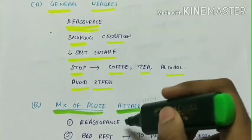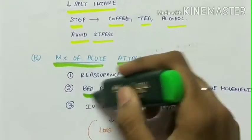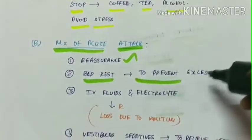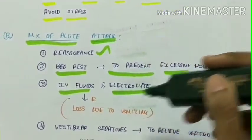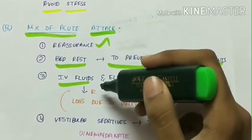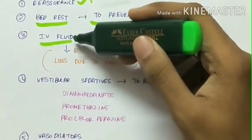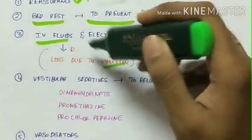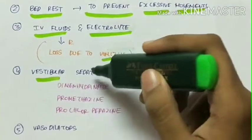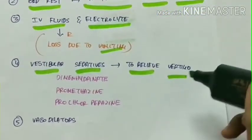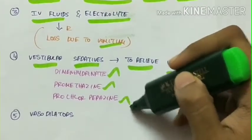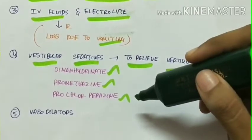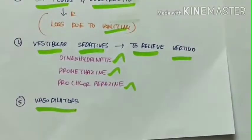Next is the management of acute attack. The first step is reassurance. Next, bed rest is advised to the patient to prevent excessive movements. IV fluids and electrolytes are given because there is loss of fluids and electrolytes due to vomiting. Next, vestibular sedatives are given to relieve vertigo which include dimenhydrinate, promethazine, and prochlorperazine which are anti-vertigo drugs and anti-nausea drugs. Fifth is giving vasodilators.